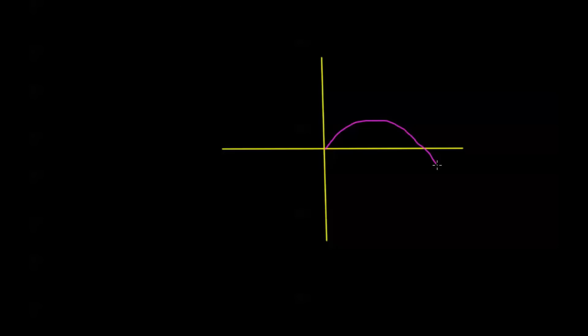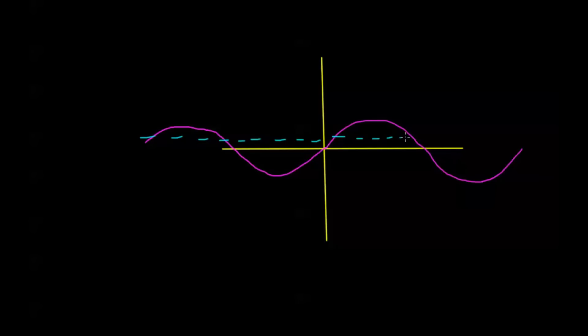We're going to be talking about inverse sine in this video, so let's take a look at the sine function. We have what's called the horizontal line test. If you draw a horizontal line and hit multiple points on the graph, then that function is not 1 to 1. Let's say this is y equals 1/2. If I had some inverse function for sine and plugged in 1/2, I would get infinitely many possible values for the output.